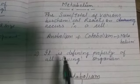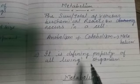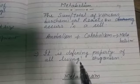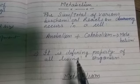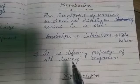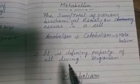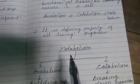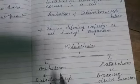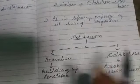Metabolism is the defining property of all living organisms. Without metabolism, life is not possible. Metabolism has two categories: one is Anabolism and the other is Catabolism.